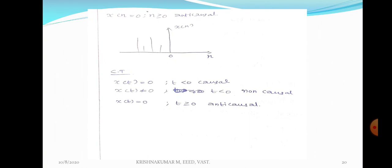For anti-causal signal: x(n) is equal to 0 when n greater than or equal to 0. For continuous time: x(t) is equal to 0 when t greater than or equal to 0 — it will be an anti-causal signal. Once again: causal signal is a right-sided signal whereas non-causal signal is a left-sided signal. x(t) equal to 0 when t less than 0, or x(n) equal to 0 when n less than 0 — it will be a causal signal.